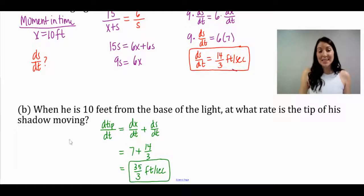So again, what does this mean? This means when the man is 10 feet from the base of the light, the tip of his shadow is increasing, because the rate is positive, at a rate of 35 thirds feet per second. If you found this video useful, please give it a thumbs up and subscribe.